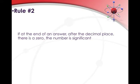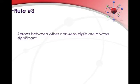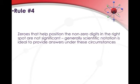Rule number two: if at the end of an answer after the decimal place there's a zero, then that number is significant — and that will become more apparent when we do our practice questions. Zeros between other non-zero digits are always significant — so if we have a 1, then a 0, then a 7, for example, that zero in the middle is significant. Zeros that help position the non-zero digits in the right spot are not significant; generally scientific notation is ideal to provide answers under these circumstances. So if we have zeros before the decimal place or zeros after the decimal place before we get to a non-zero number, they are placeholders and are not significant.